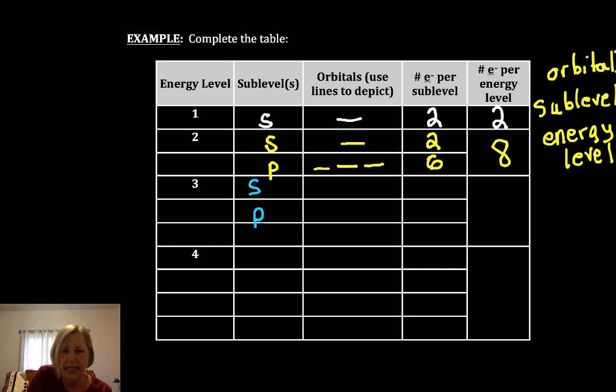Energy level 3 has S, P, and D - so 1, 3, and 5 orbitals. Two electrons in the S. 2, 4, 6 for the P. 2, 4, 6, 8, 10 for the D, for a total of 18. In an earlier video, I showed the formula 2n squared for determining that.